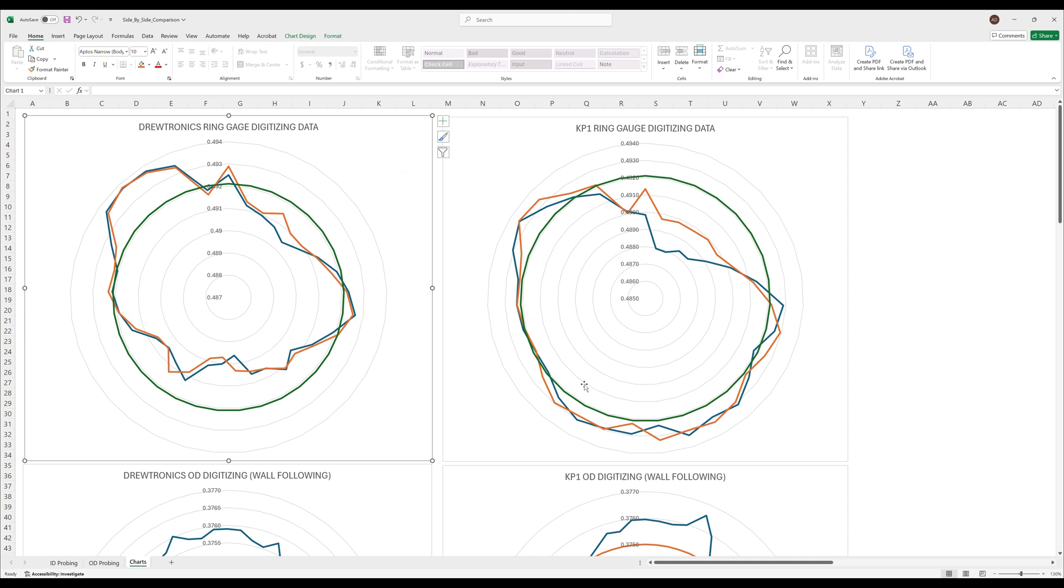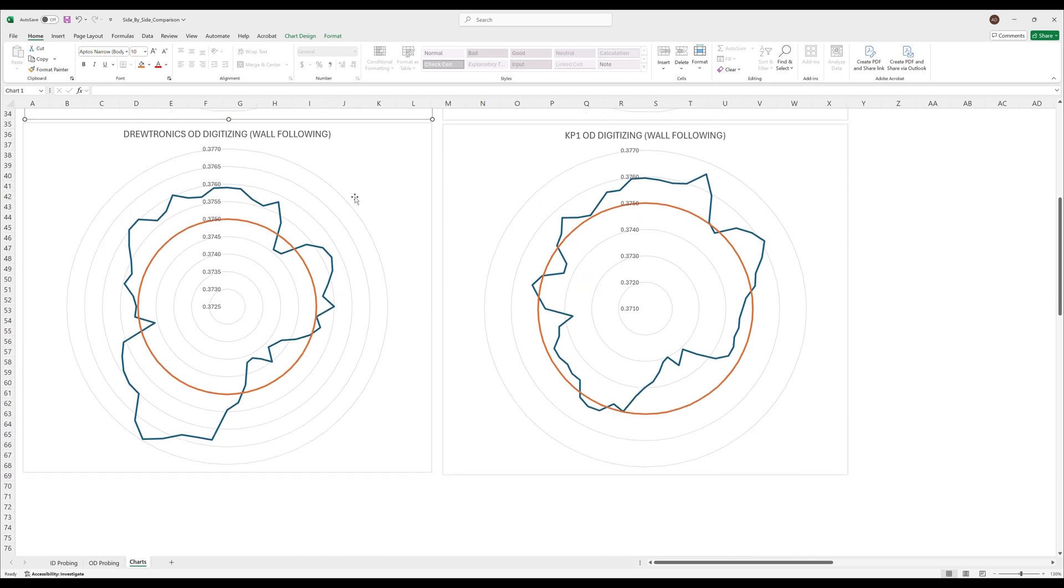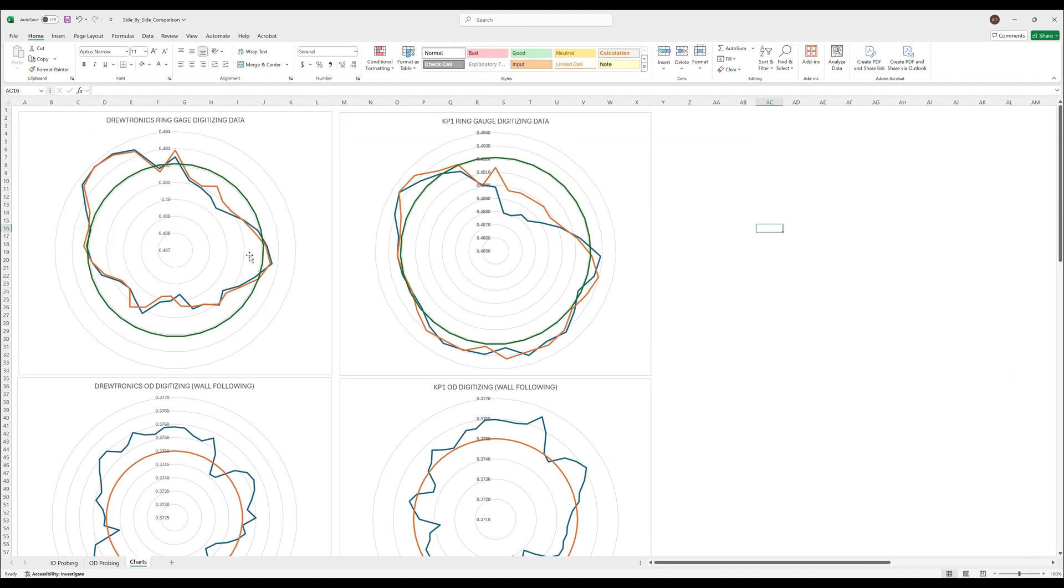But it does appear that the KP1 does a better job tracking on the ring gauge and the same is kind of true for the OD digitizing. So both of these are probe hits versus the perfect circle when we were digitizing the OD of that shank. If we take a look here at the Drutronics it looks like it deviates quite a bit more than the KP1 does following the OD. And I know these plots look really bad like how is any probe doing such a bad job tracking the OD but these are exaggerated. You can look at the scales here these are exaggerated these are very very small increments. On this chart specifically right here one of these steps is a thousandth of an inch.